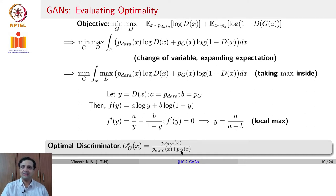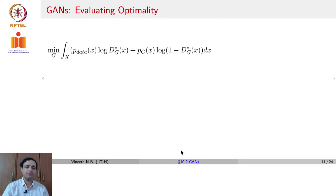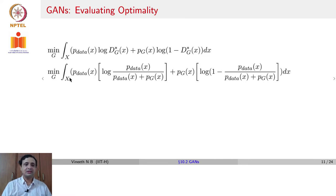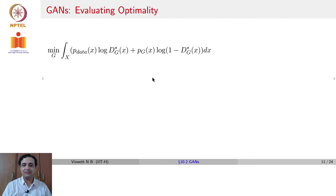That does not end the story, because we also have a generator to think about. Let us now look at the generator side of optimality. We have min over g of p_data(x) log of the optimal discriminator. Assuming the max over d has been evaluated and substituted inside the integral, plus p_g(x) log(1 minus d_g_optimal(x)) dx.